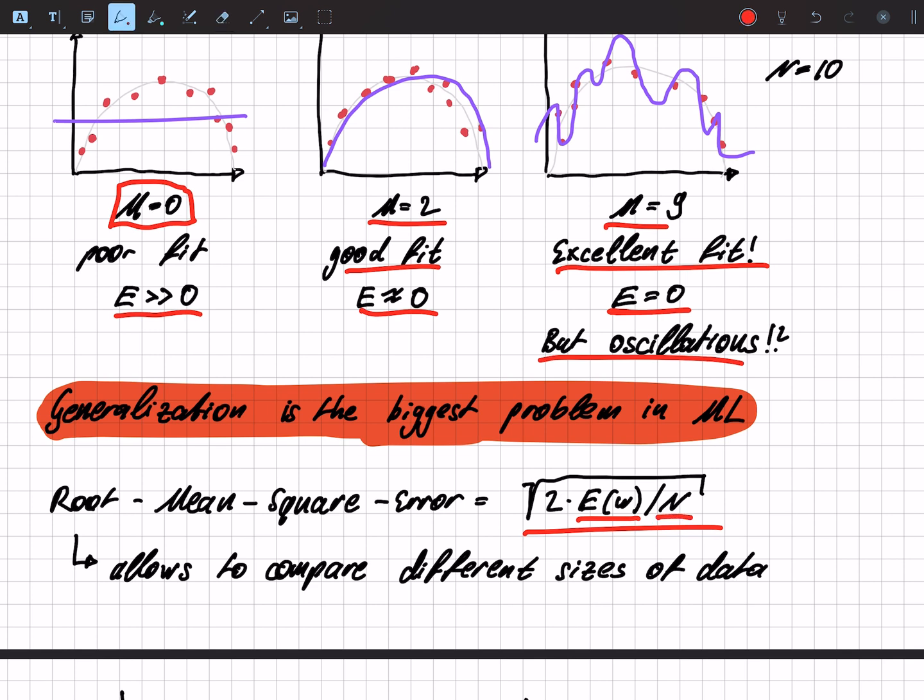And we divide by n, where n is the amount of data. This allows us to compare different sizes of data in different sizes of models.